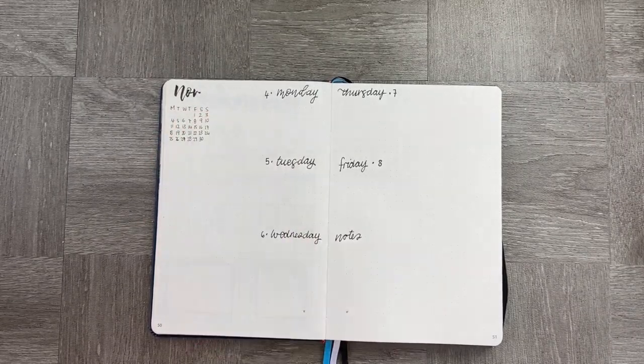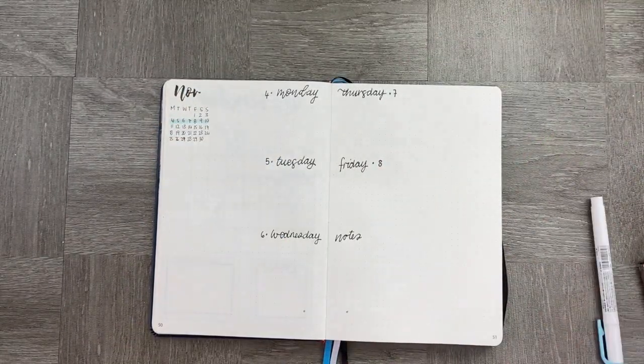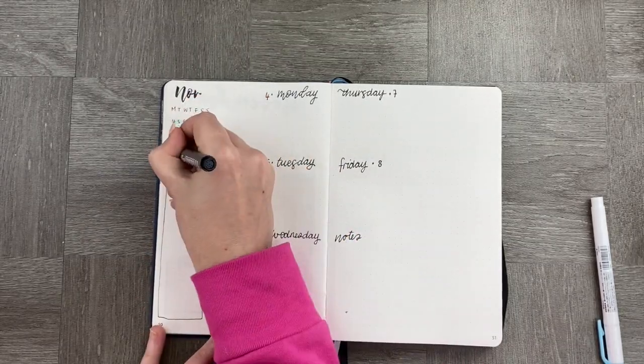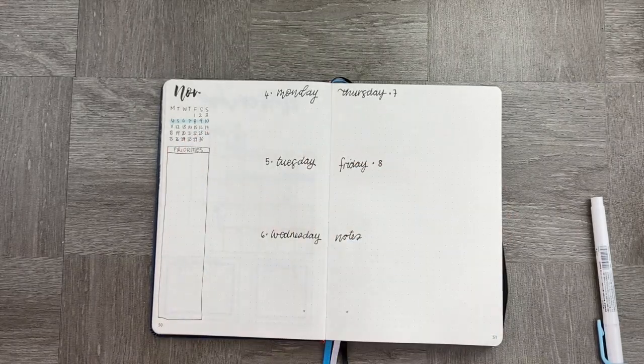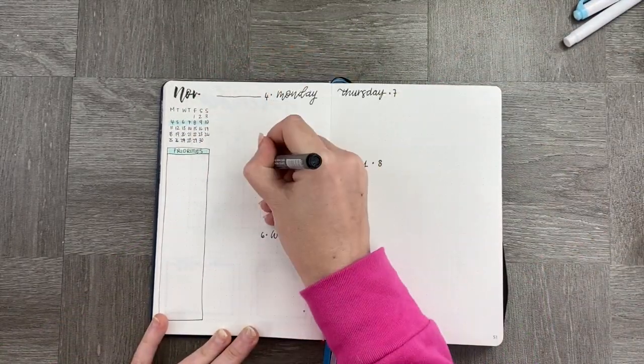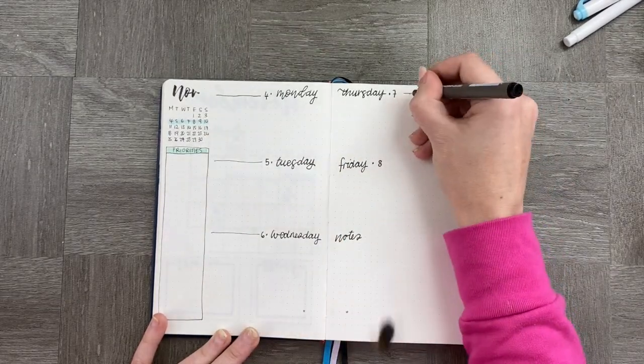All right, now that we've created our little calendar, I'm going to highlight which week it is and I'm also going to add a priorities box. Again, I'm just free handing it. I'm not using a ruler for this, and just creating the priorities box with the highlighter to make it seem a little bit more structured. I'm just going to add some lines in to make sure that I know where I'm writing my notes.